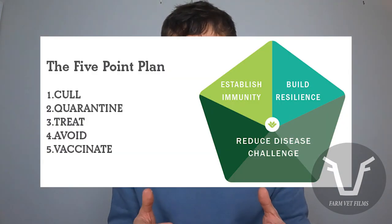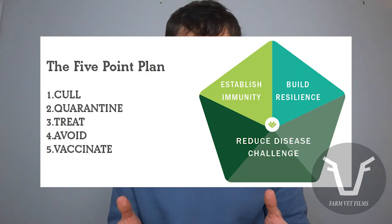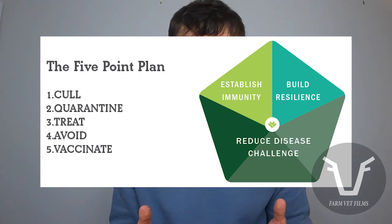Other aspects of the five-point plan for lameness probably also apply, perhaps in particular isolation. If you see an outbreak of this in your sheep, I highly recommend picking up the phone and talking to your vet.